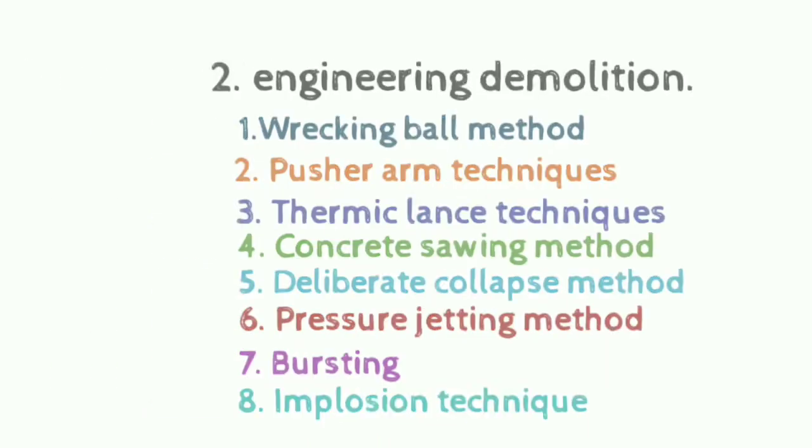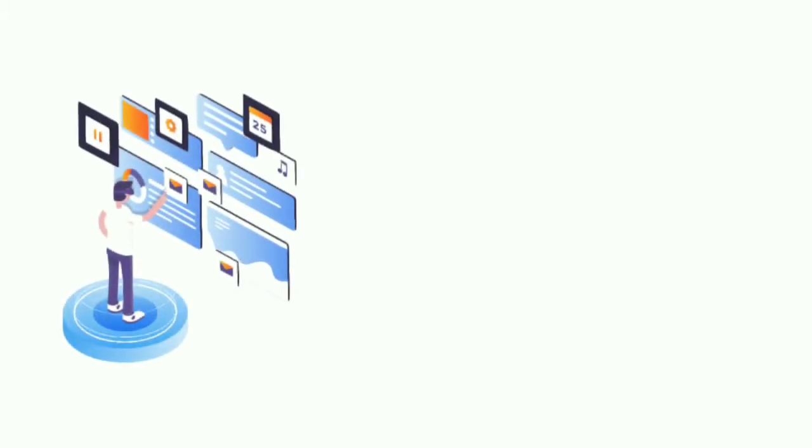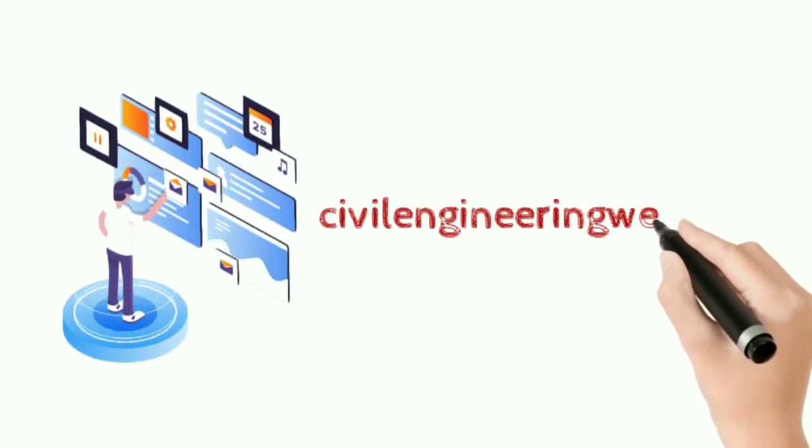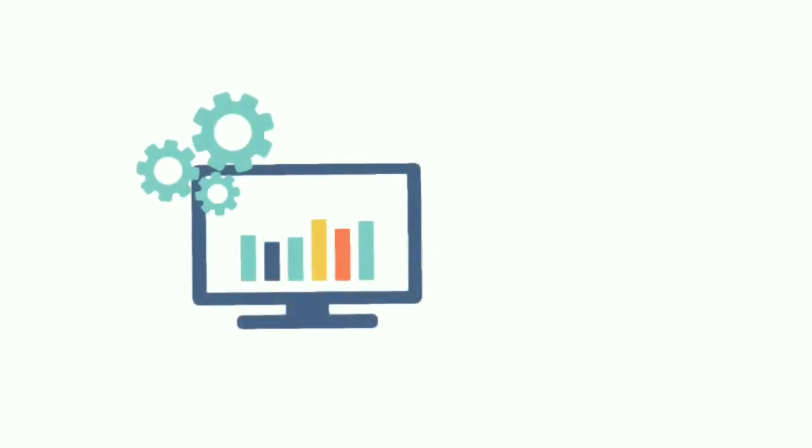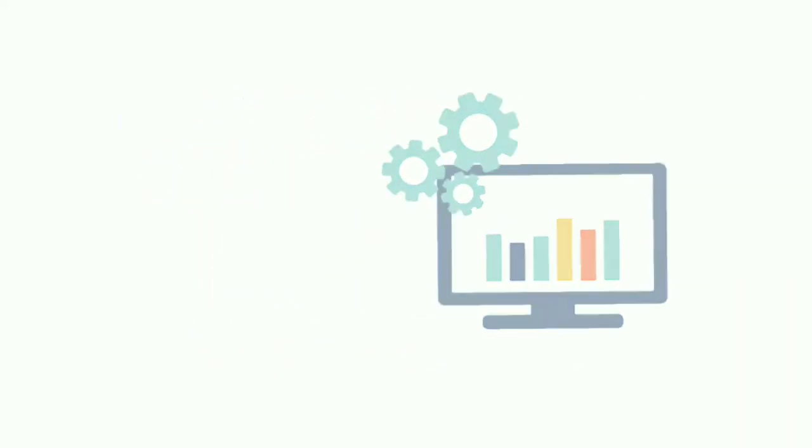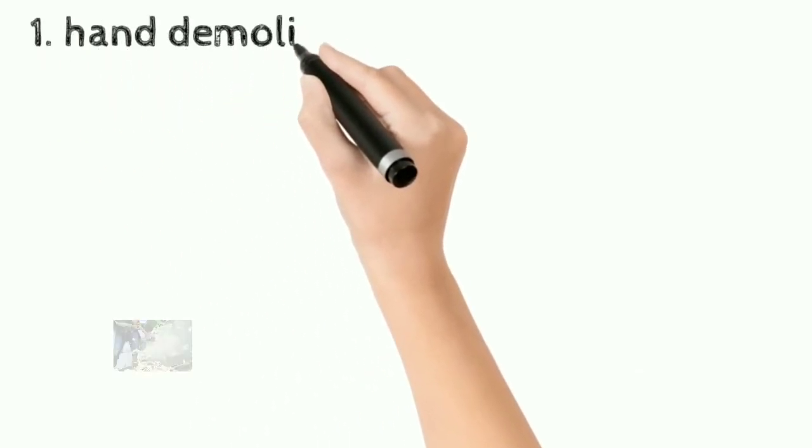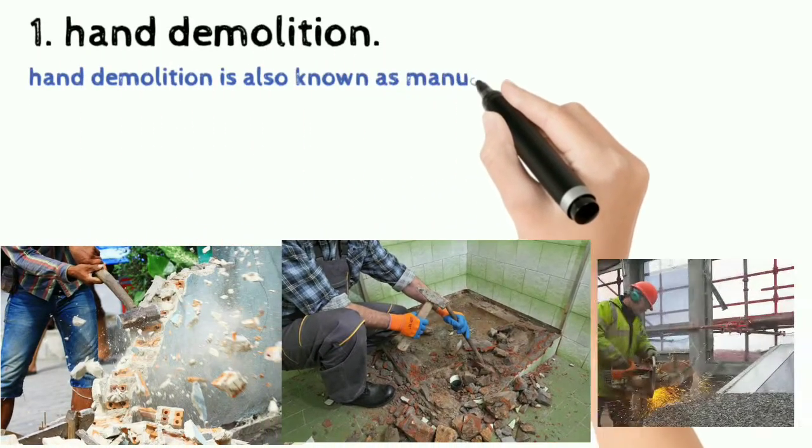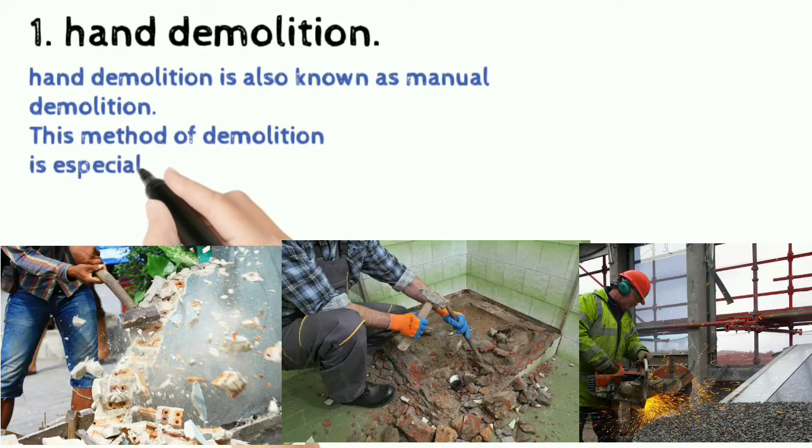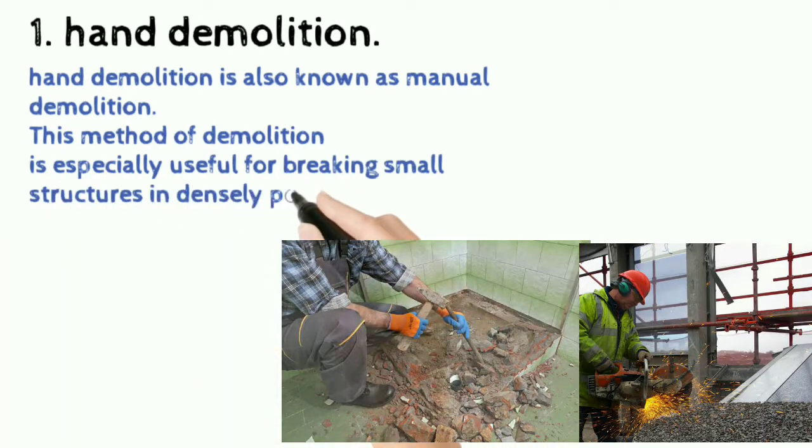We will not explain all methods in detail. If you are interested in more details, please visit our website civilengineeringweb.com. We try to explain all methods in videos for graphical presentation. 1. Hand Demolition: Hand demolition is also known as manual demolition. This method of demolition is especially useful for breaking small structures in densely populated areas.